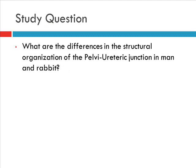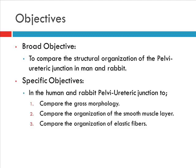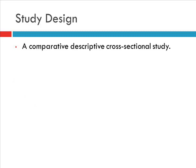I sought to answer whether there are any structural differences in the organization of the pelvic ureteric junction in man and rabbit. In doing so, I looked at the gross morphology as well as the microscopic organization, focusing on the muscularis as well as the connective tissue organization — particularly the elastic fiber organization at the transition.